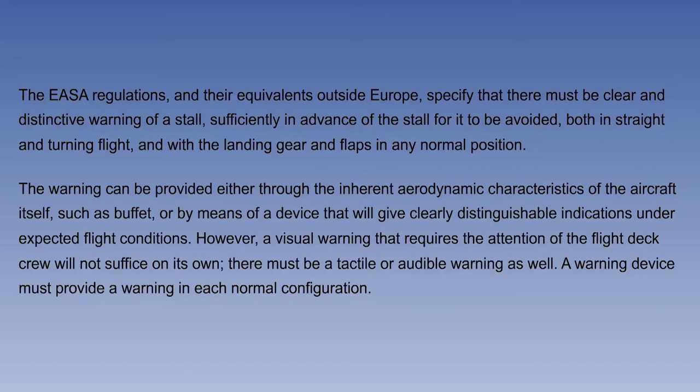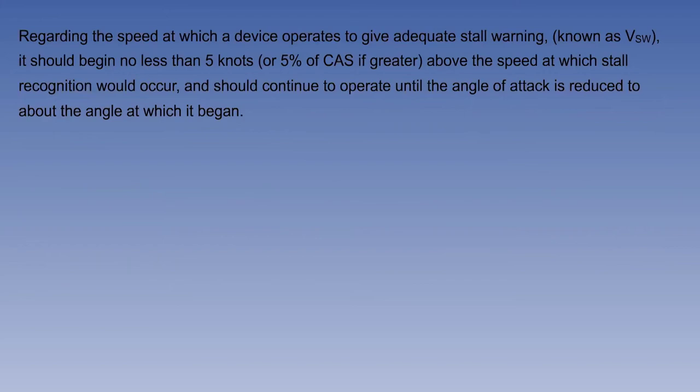A warning device must provide a warning in each normal configuration. Regarding the speed at which a device operates to give adequate stall warning, known as VSW, it should begin no less than 5 knots, or 5% of CAS if greater, above the speed at which stall recognition would occur, and should continue to operate until the angle of attack is reduced to about the angle at which it began.